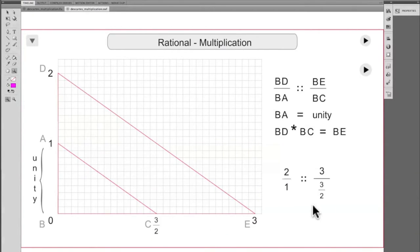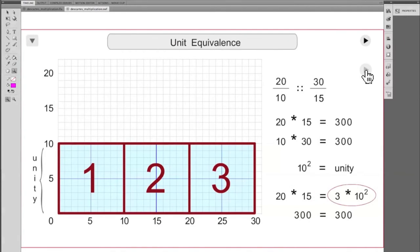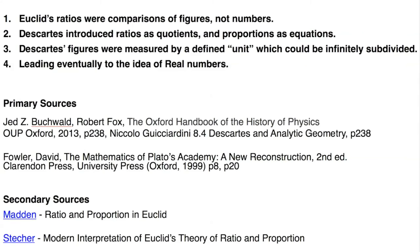Here's an application to rational numbers. And here the whole number approach is spelled out in a little bit more detail. And here it is noted that Descartes introduced ratios as quotients and proportions as equations.